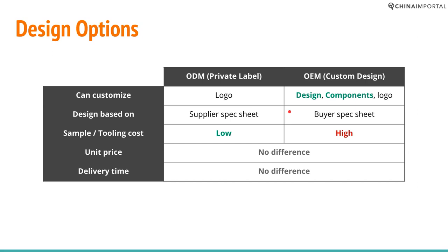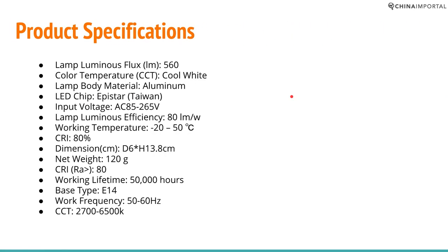You have to give the supplier an exact specification. You can't just come with a vague concept and expect them to spend $200,000 turning it into a prototype — it doesn't work like that. For most buyers, ODM is the way to go. If you have a truly unique idea it can be done, but then it's up to you to produce the spec sheet.